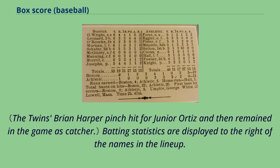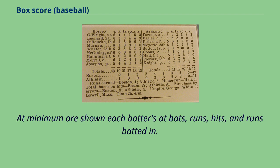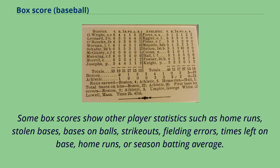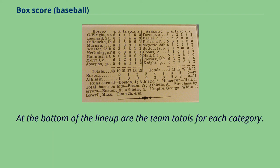Batting statistics are displayed to the right of the names in the lineup. At minimum, each batter's at-bats, runs, hits, and runs batted in are shown. Some box scores show other player statistics such as home runs, stolen bases, bases on balls, strikeouts, fielding errors, times left on base, or season batting average. At the bottom of the lineup are the team totals for each category.